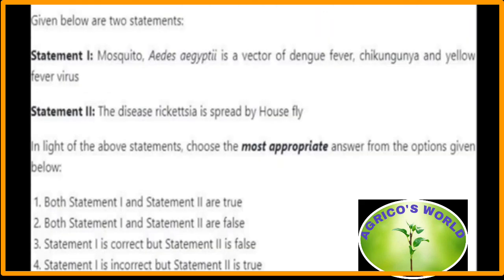Given below are two statements. Statement 1: mosquito Aedes aegypti is a vector of dengue fever, chikungunya, and yellow fever virus — yes, mosquito is a vector of all three, so statement 1 is correct. Statement 2: the disease rickettsia is spread by the house fly — no, statement 2 is wrong. The most appropriate answer is option three: statement 1 is correct and statement 2 is false.